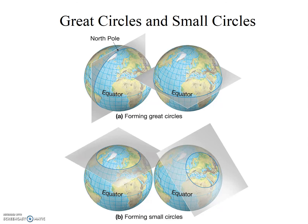Examples of great circles include the equator, the prime meridian combined with the 180 meridian — those are the two shown here at the top — and also the circle of illumination, which is basically the edge of the sunlight on Earth at any given time. Notably, half of the Earth is always in the sunlight and half is always in the dark.